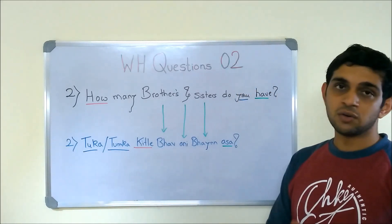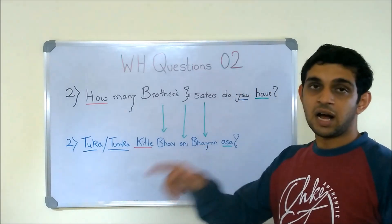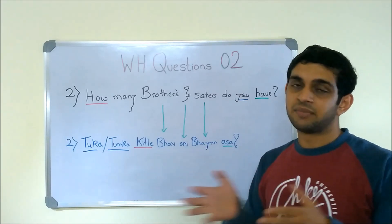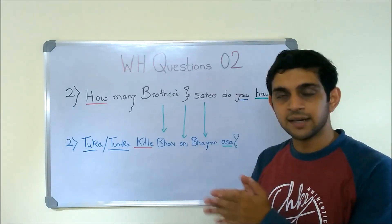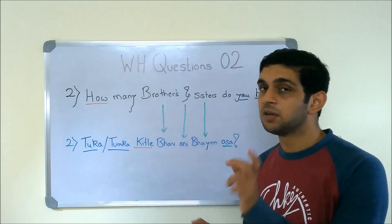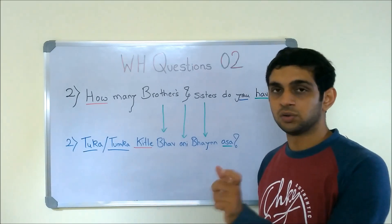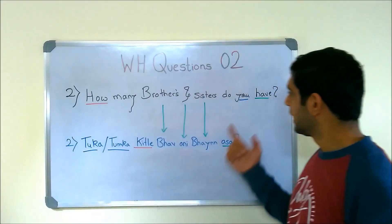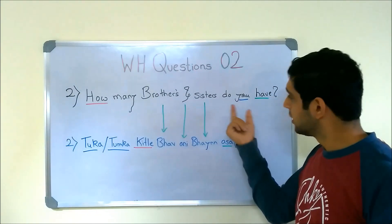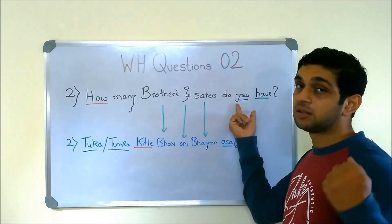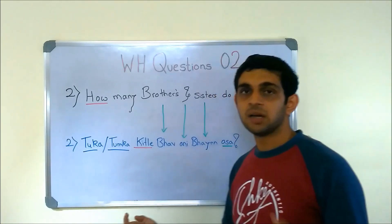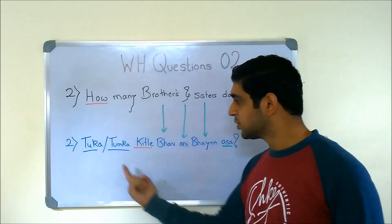If you want to say only 'you' as in 'How are you?', you use TU or TUMI — TUM KASWASA. But here you have 'DO YOU', so that is the reason why whenever you have 'DO YOU', you say TUKA, or in respect you say TUMKA.